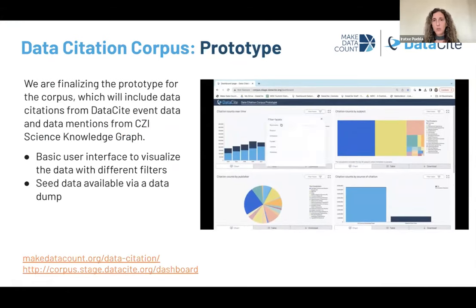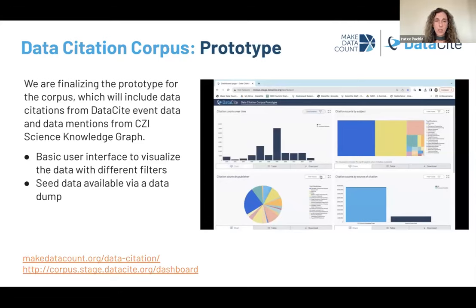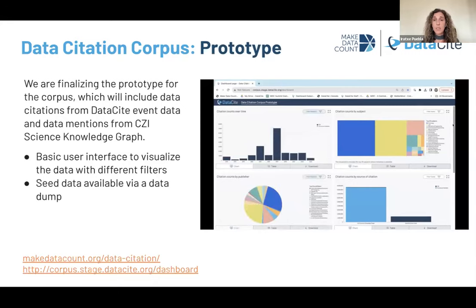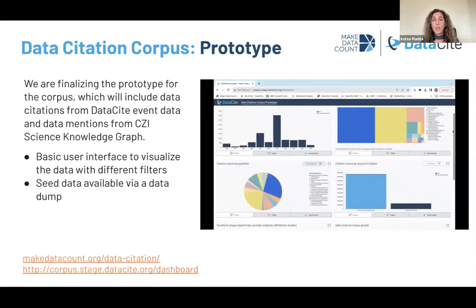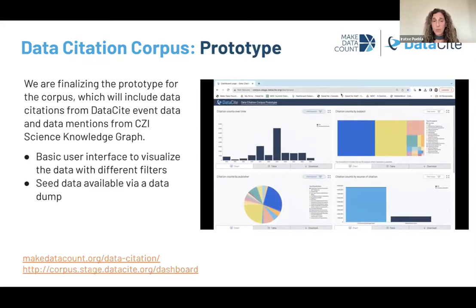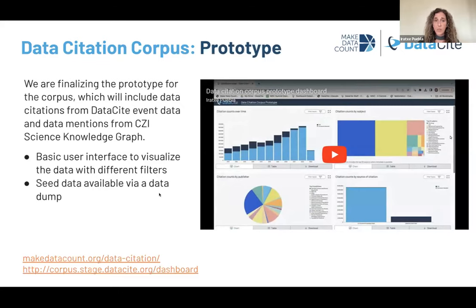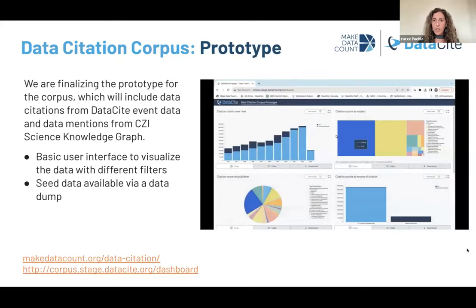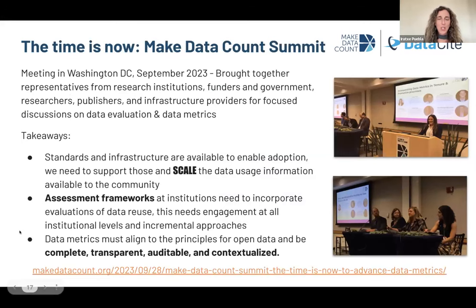We are at the earlier stages, developing a prototype that will initially include a seed file with information on data citations from DataCite event data as well as a file of data citations that the Chan Zuckerberg Initiative has provided — one of the groups using machine learning to identify citations to datasets through mining full text of articles. As we move ahead, we plan to add additional citations to ensure broad coverage and make improvements to functionality. Eventually we'll have the corpus at production stage and make it available to the community through an API and data dump, as well as a dashboard for visualizations.